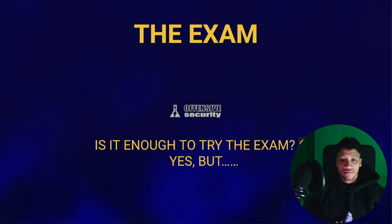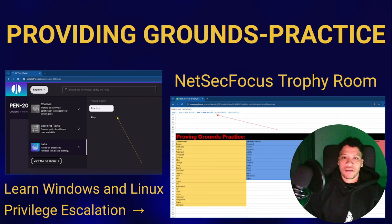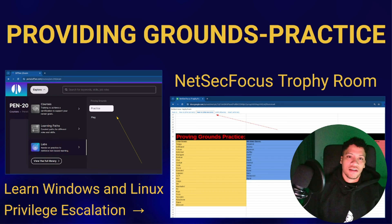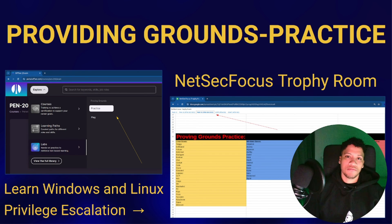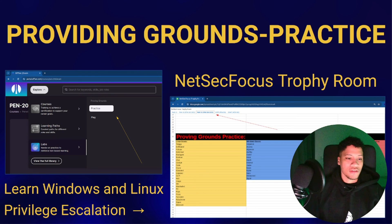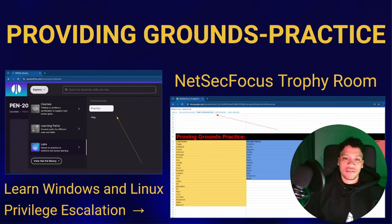Is this enough for the exam? Yes, but I think you need to spend more time with additional resources. OffSec provides a subscription for Proving Ground Practice, where you will find a lot of boxes quite similar to OSCP boxes. I really suggest using this resource and the NetSec Focus Trophy Room — I'll share the link in the description. There you will learn Windows and Linux privilege escalation, and this knowledge can be merged with the knowledge from the course.